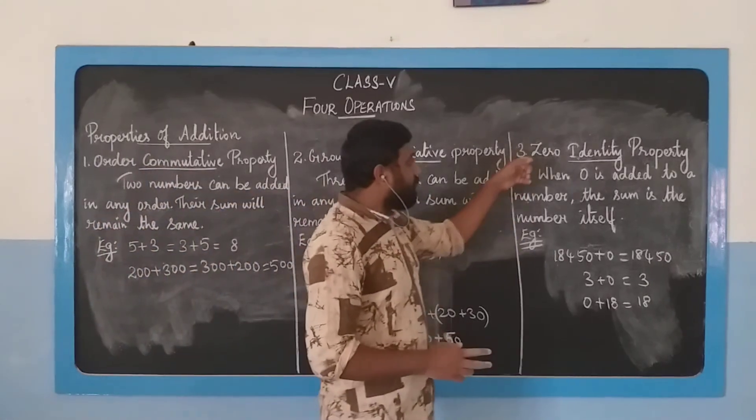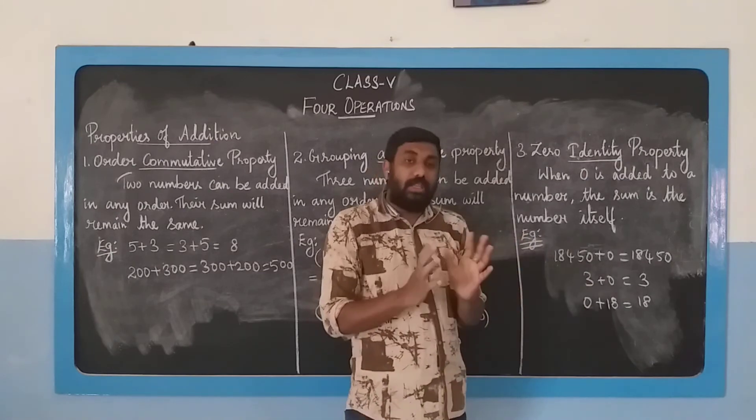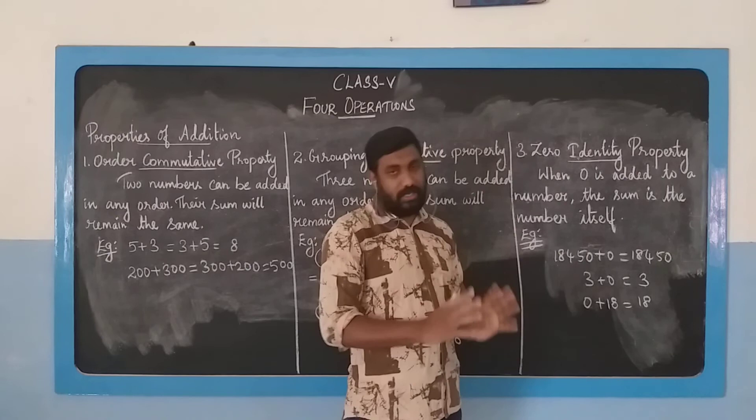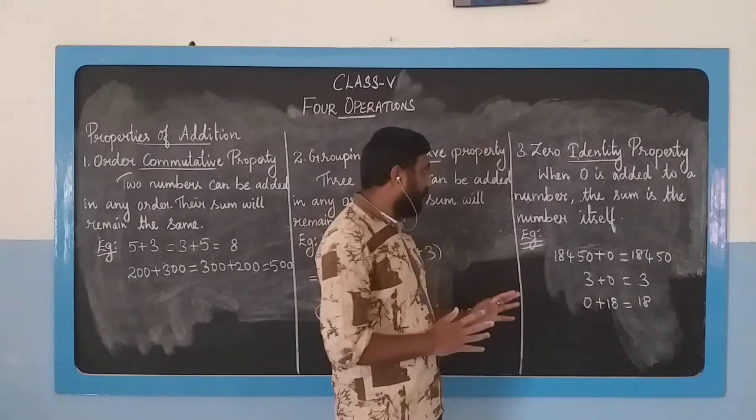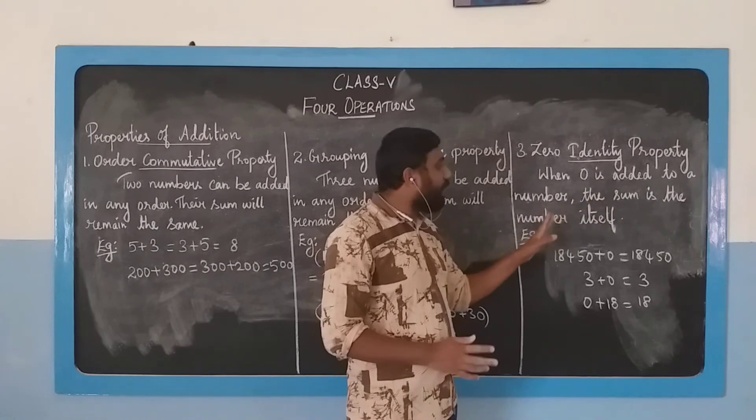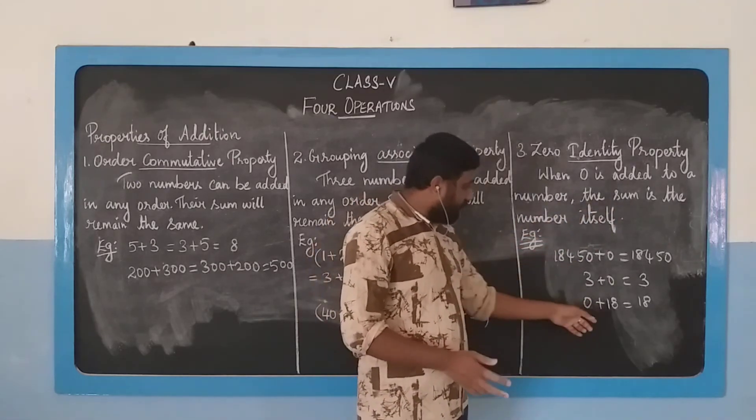The third property is zero identity. Zero is the identity element of addition. What does that mean? When zero is added to a number, the sum is the number itself.